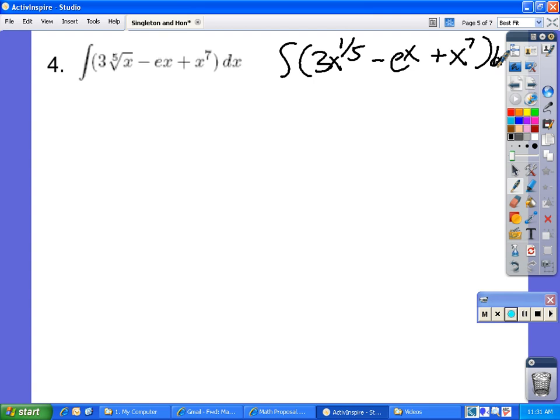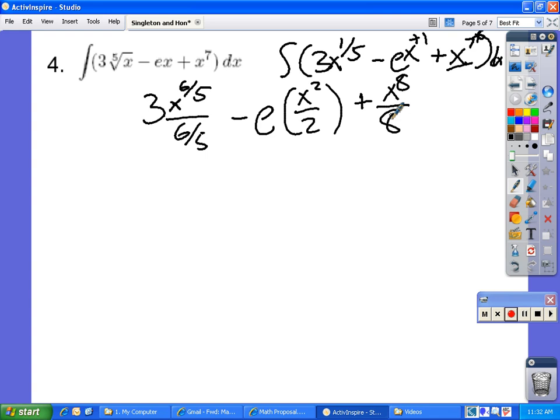Then we integrate this. We took out the 3. Then add 1 so it will be 6 fifth over 6 fifth, or multiply 5 sixth. Then integrate ex. To integrate ex it's e to the 2nd because we are plus 1 over 2. And to integrate x to the power of 7, you plus 1 and divide by the number. So it will be x to the power of 8 over 8 plus c. Never forget c.